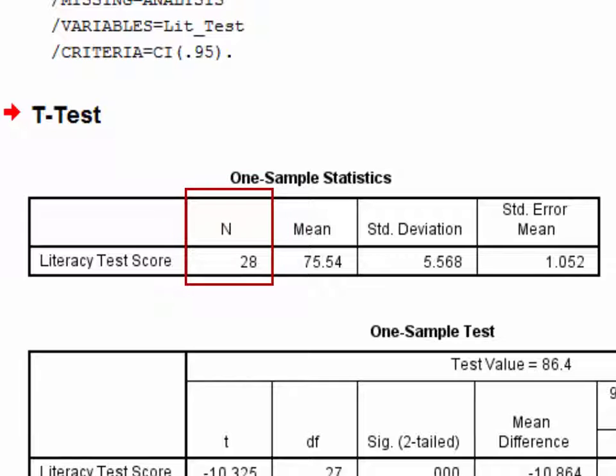Here we can see that there were 28 students in the class, and their mean test score was 75.54. This is the value that we will be comparing with the national average of 86.4 using the one-sample t-test. You can also see that the sample's test scores varied around this mean by an average of 5.568 points. This is the standard deviation.